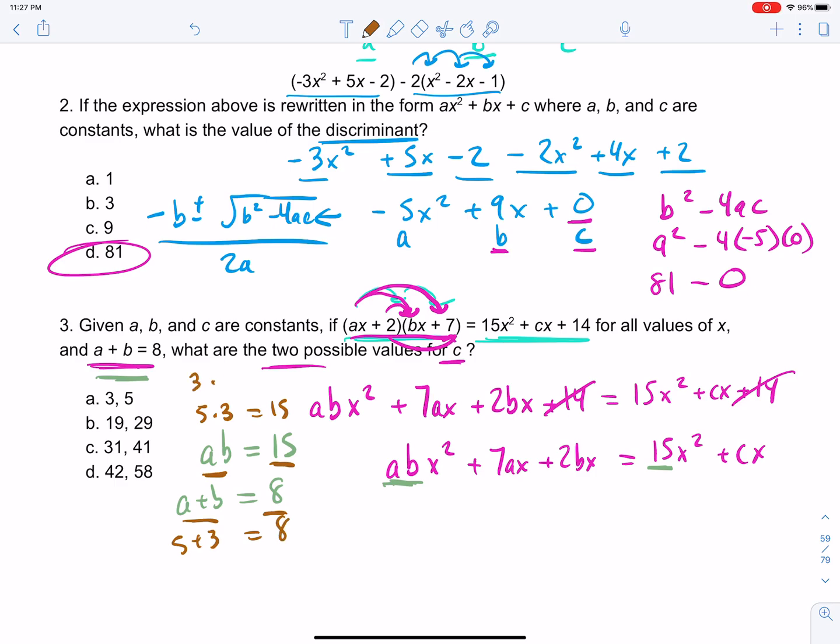It's also interchangeable. We could have 3 times 5 is 15, and 3 plus 5 gives us 8. So our a could be 5, and our b could be 3, or our a could be 3, and our b could be 5. But now, here's why that's important.